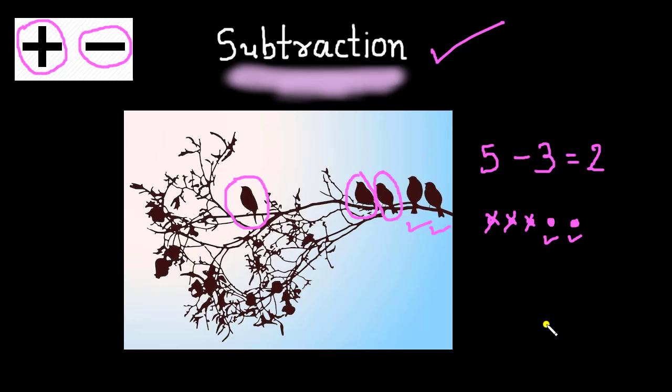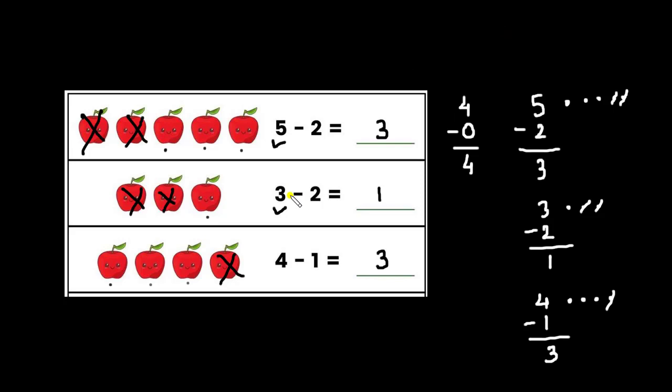Friends, in the previous video, we started the discussion on subtraction and we took two pictorial examples with five birds and three flown away. Hence, we are left with two birds on the branch. Here we had some apples and we ate or took some apples from them and the remaining is the answer.